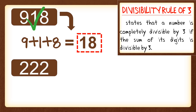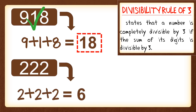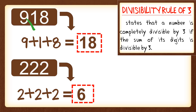Next, 222. We get the sum of its digits: 2 plus 2 plus 2, which gives a sum of 6. Since 6 is a multiple of 3 and divisible by 3, 222 is divisible by 3.